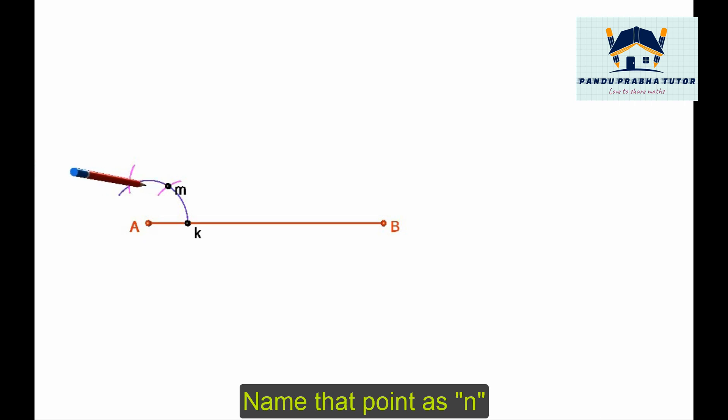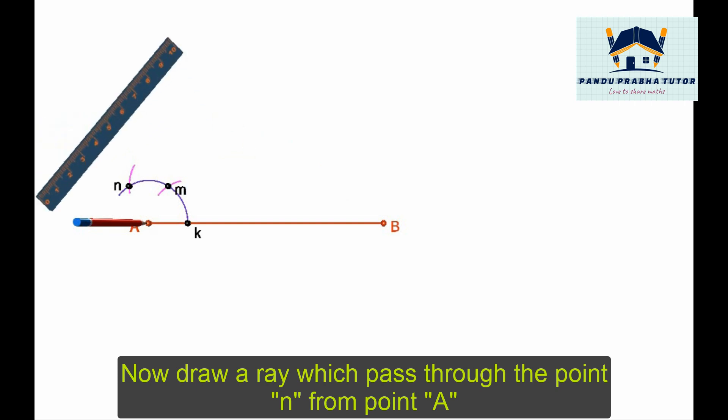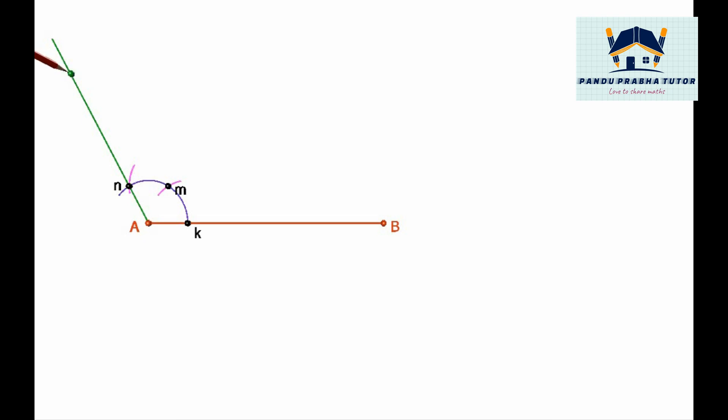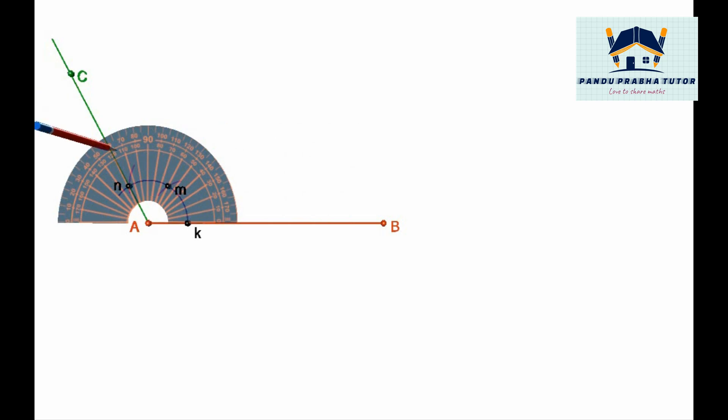Now draw a ray from A passing through N. Mark any point on that ray as C. Angle CAB is the required 120 degree angle.